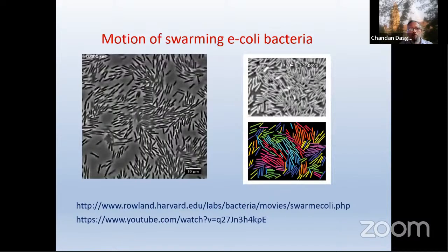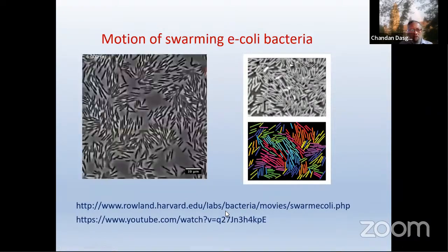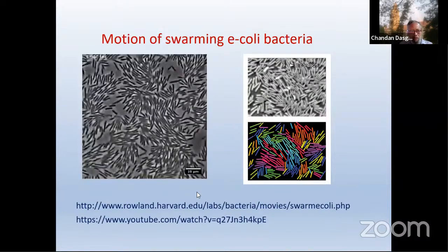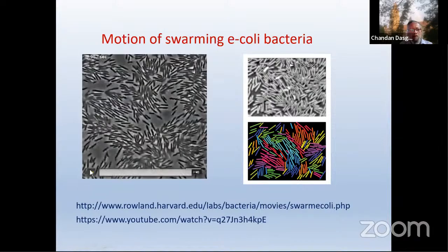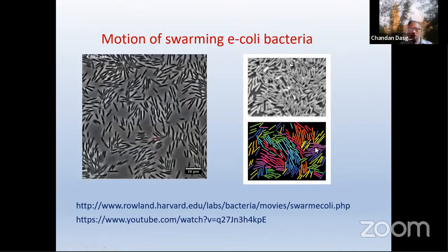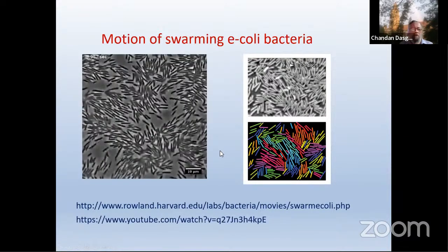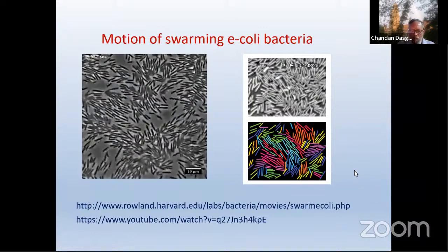One can look at a dense system of bacteria. Here is an experimental movie of how a collection of E. coli bacteria move. You can see that they are moving more or less at random, but there is some pattern: if you look at the actual motion in more detail, you'll see that there are bunches of bacteria moving together, shown here by different colors. This is basically one example of collective motion of these living objects — a swarming motion which we'd like to model.